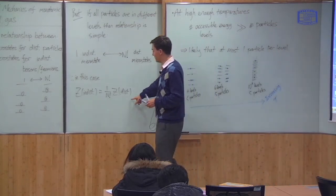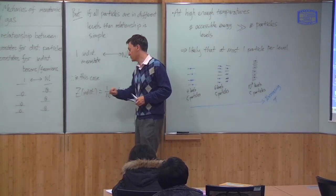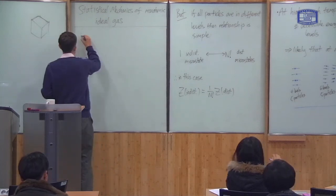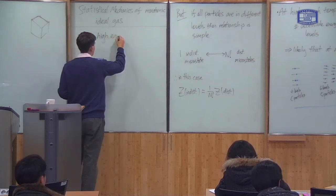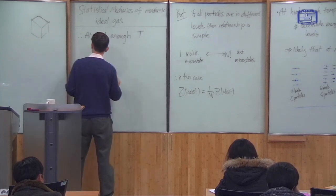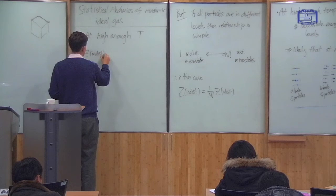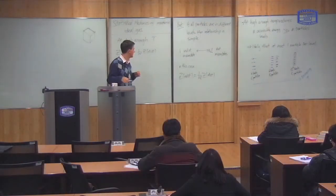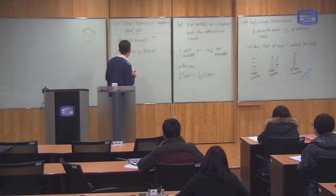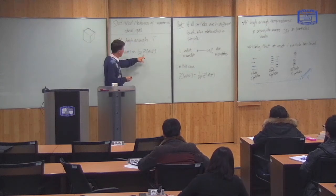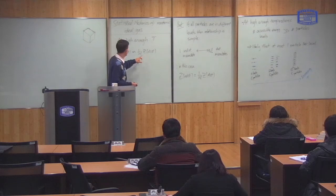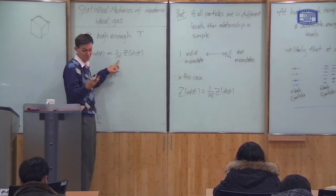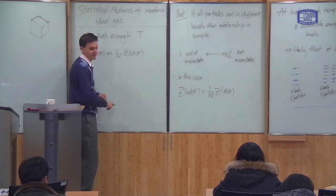If the particles are all in different levels, we can simply relate the partition function for indistinguishable particles to the partition function for distinguishable particles. So therefore, at high enough temperatures, the indistinguishable partition function is approximately one over N factorial times the distinguishable partition function. For distinguishable particles, Z is quite easy to calculate. Starting from Thursday's class, we'll start from here and calculate this to find the properties of the ideal gas.